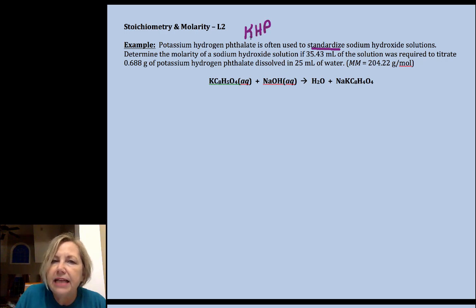Now that's not a potassium and a hydrogen and a phosphate, it's potassium hydrogen phthalate, a very large molecule with a molar mass of 204.22 g/mol. So the question tells me I have 0.688 grams of potassium hydrogen phthalate, and our goal is to find the molarity of our sodium hydroxide.